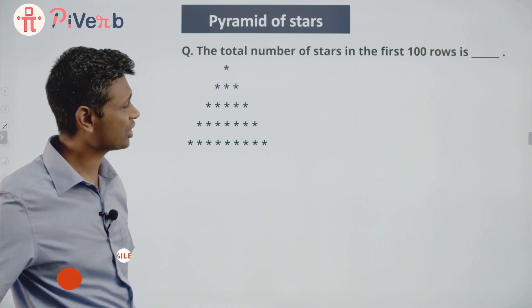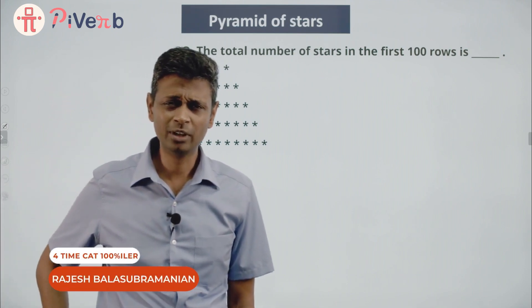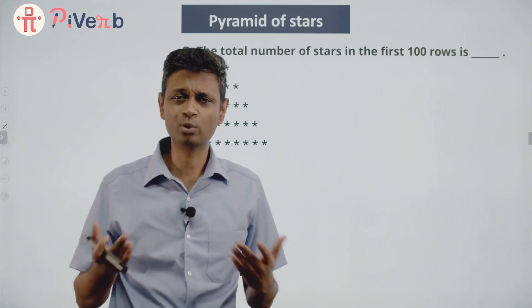Lovely, the total number of stars in the first 100 rows. Questions are very simple, don't worry about 100, try first 2 rows.